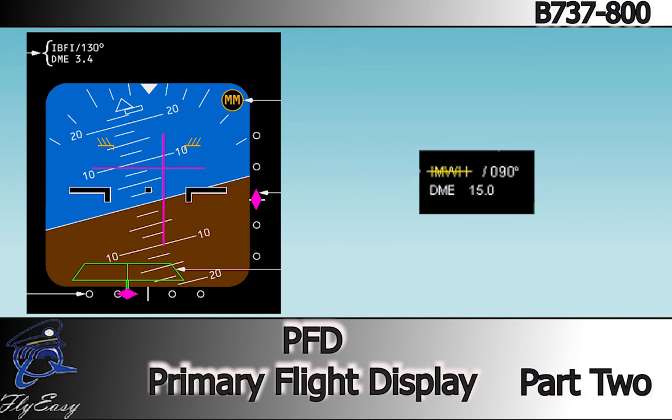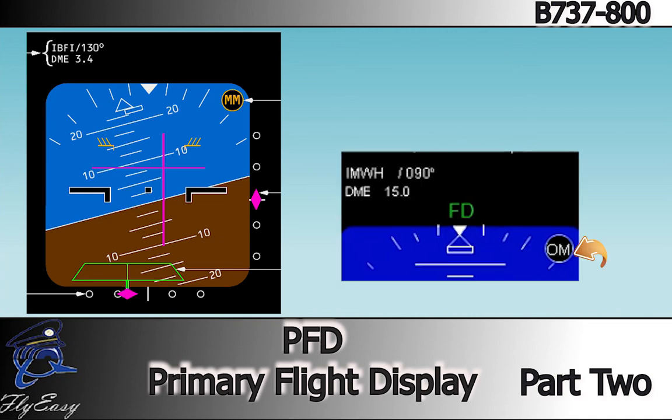If the Approach Courses in the ILS receivers disagree, the course display turns amber with an amber line through it.